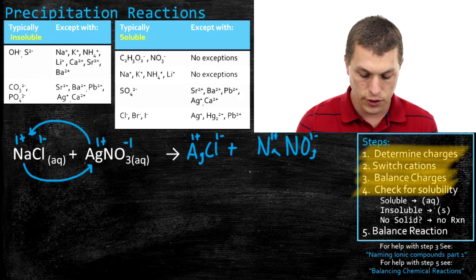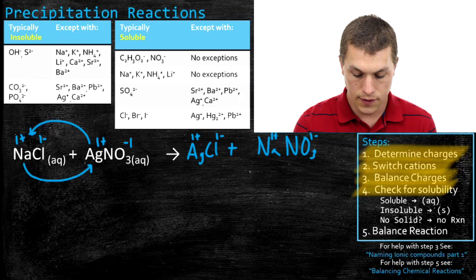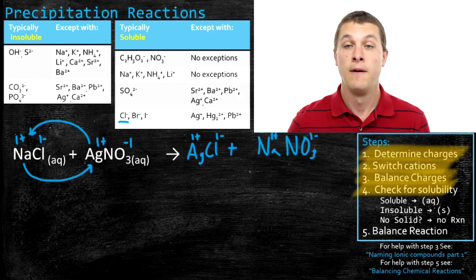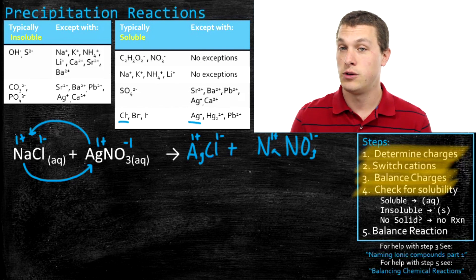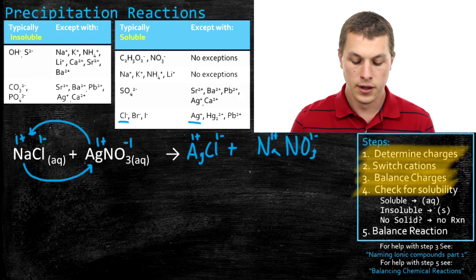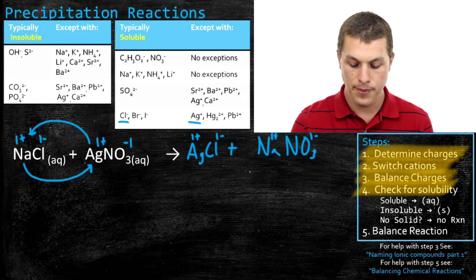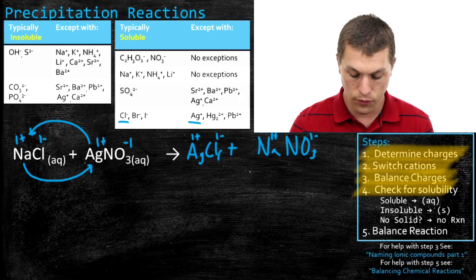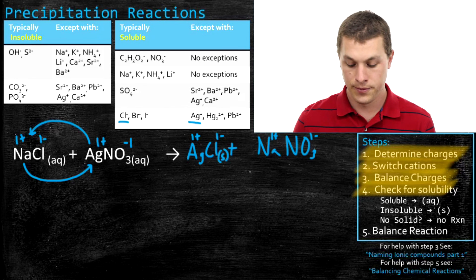Let's check for solubility, starting with silver chloride. We go into our solubility tables and look for silver or chlorine. On the table listing soluble ions, we see chlorine — chlorine ions typically form soluble compounds, except when paired with silver plus one. That's why it's important we determined those charges. Chlorine compounds are typically soluble, but not when paired with silver. That means silver chloride is insoluble, and we put S for solid — don't confuse S for soluble; it means solid, the phase it's in.